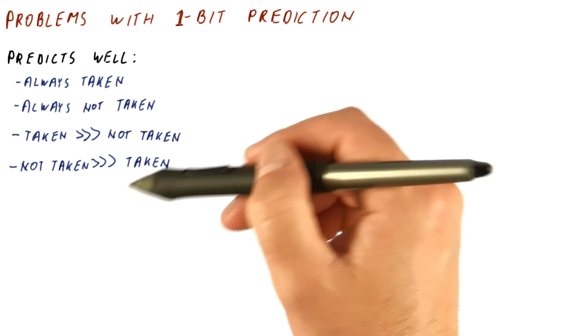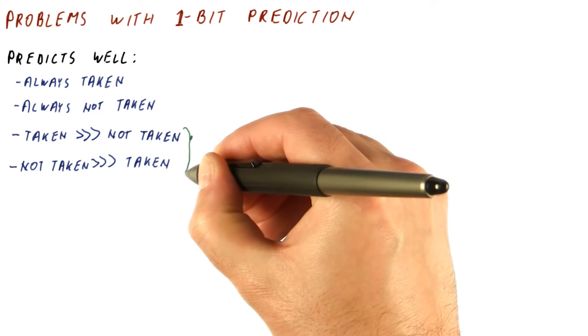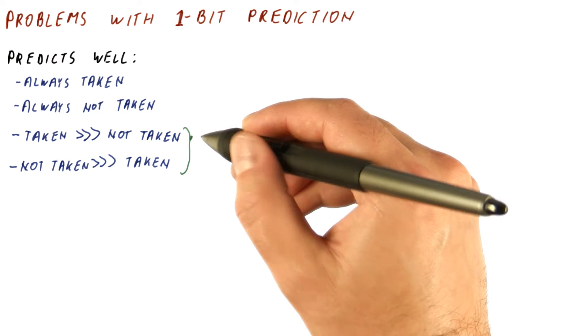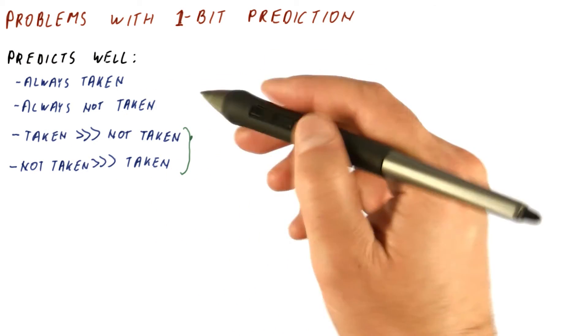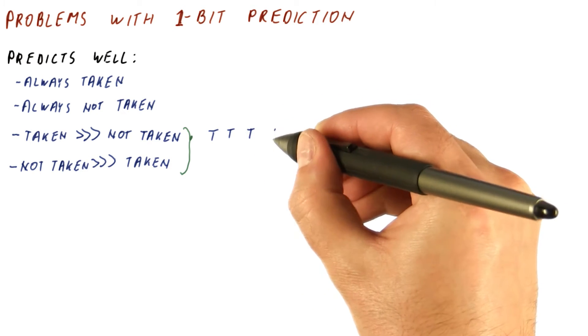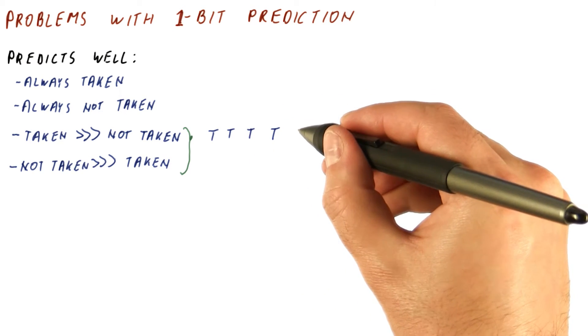So what's wrong with the one-bit predictor? What's wrong with it can be glimpsed from these. Let's look at the branch that is, for example, more taken than not. So it's been taken many times, and then there is a not taken outcome, and then it's going to be taken many more times.